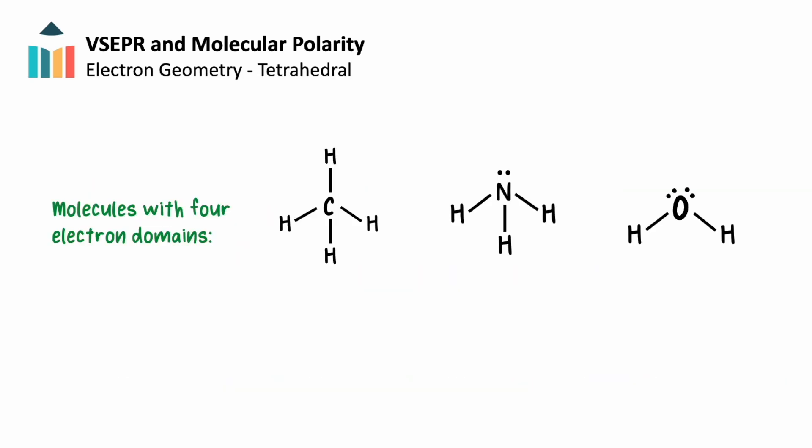Let's begin by looking at the Lewis structures of three molecules that each have four electron domains: methane, ammonia, and water. While each of these molecules have the same number of valence electrons available for bonding, they'll each share their electrons in different ways. The carbon in methane achieves its octet structure through four bonds, whereas the nitrogen in ammonia has three bonds and one non-bonding pair of electrons, and the oxygen in water has two bonds and two pairs of non-bonding electrons.